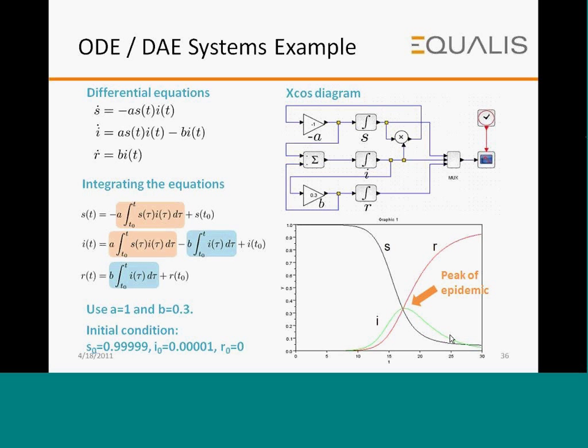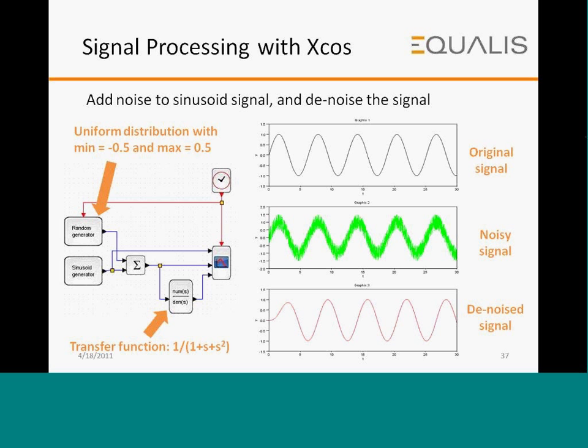Moving on to a signal processing example: take a signal, put some noise on it, and filter it. A random generator produces noise, a sinusoidal signal is generated, they are summed together and filtered. In the scope you can watch the original sinusoidal signal, the noisy signal, and the filtered output. The original signal, the noisy signal, and the denoised or filtered signal are all visualized.